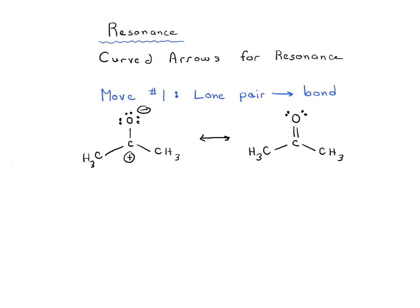Move number one: we're going to show how to move a lone pair to a pi bond. On the left is one resonance form and on the right is another — these are different ways of arranging the pi electrons. We take an arrow with its tail on the lone pair on oxygen and the head pointing between the carbon and the oxygen.